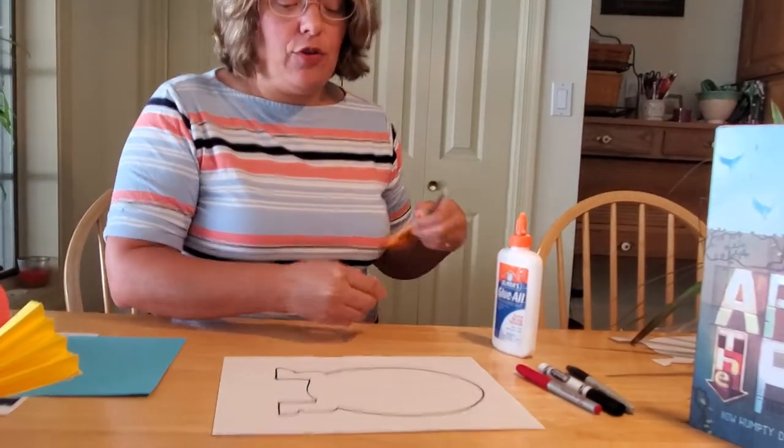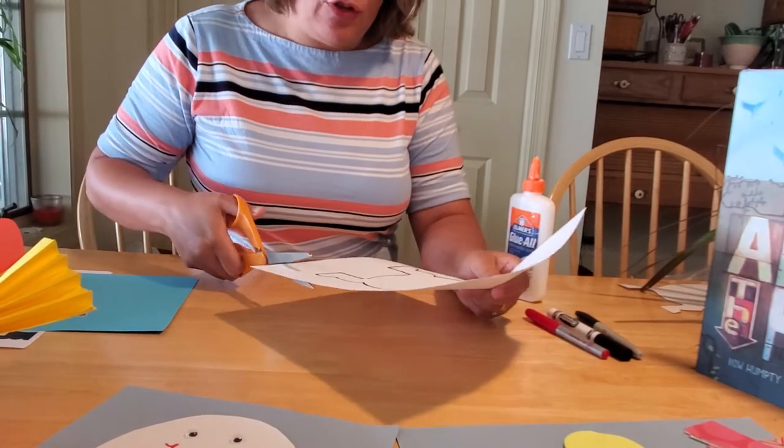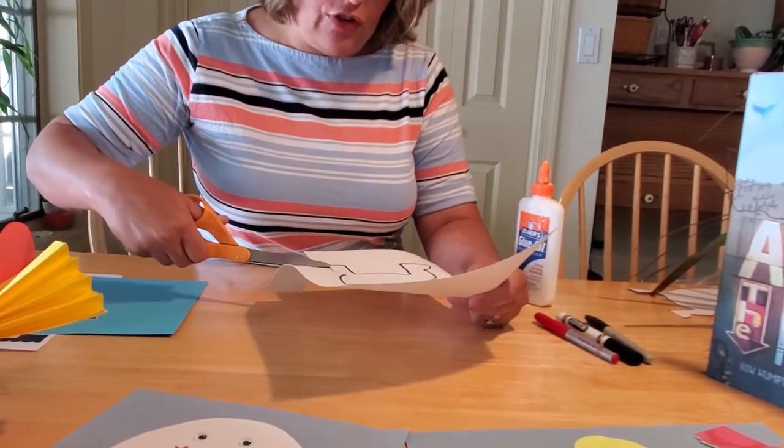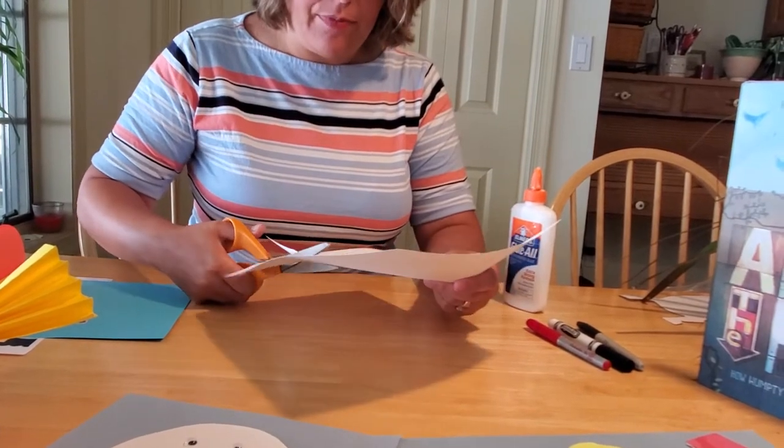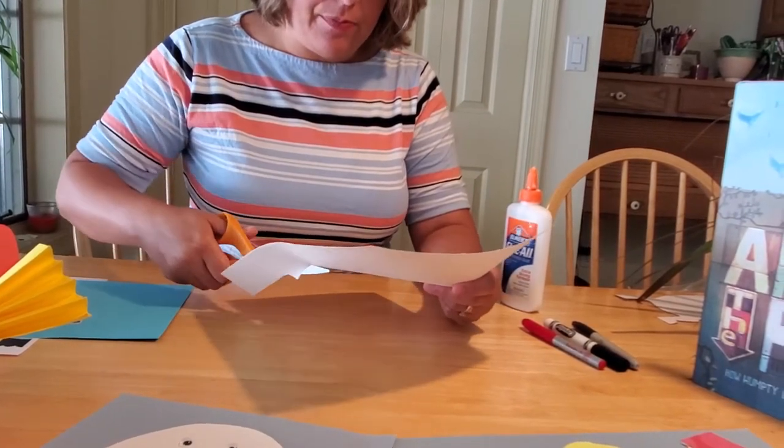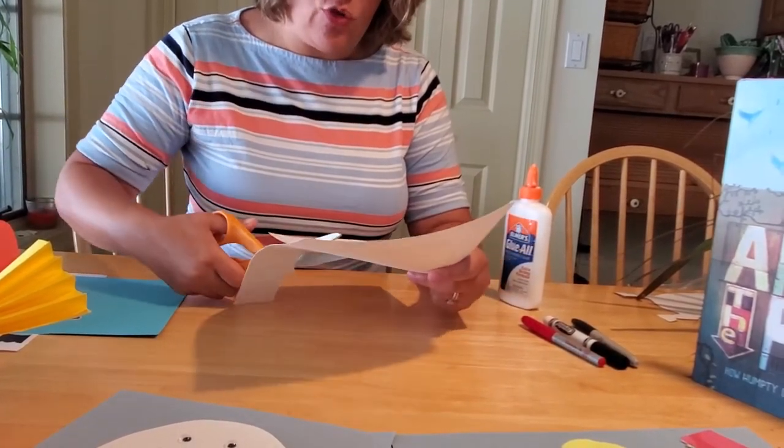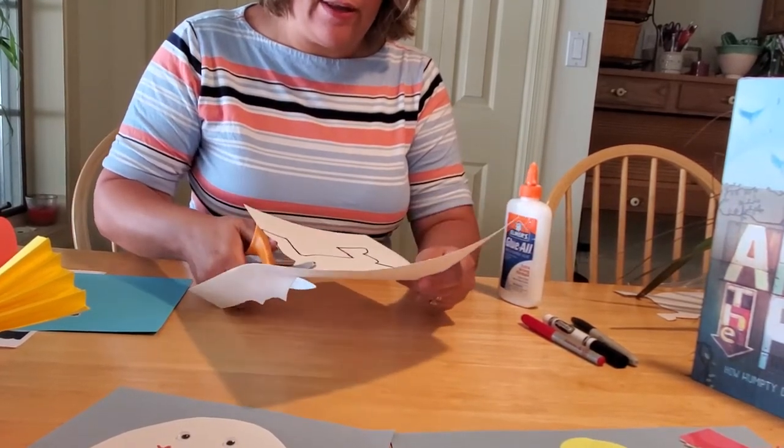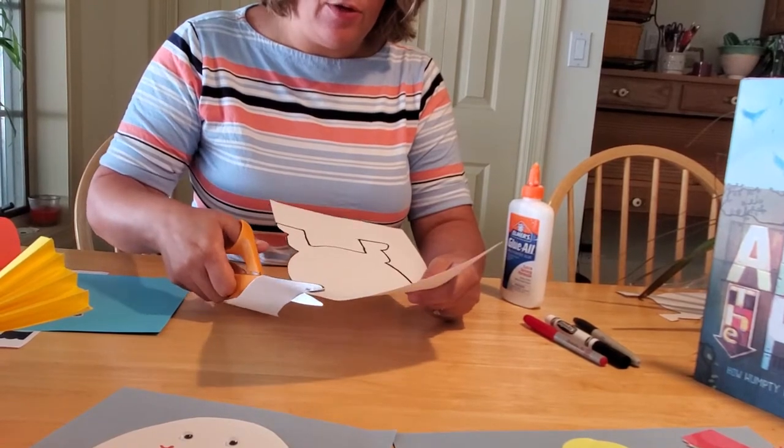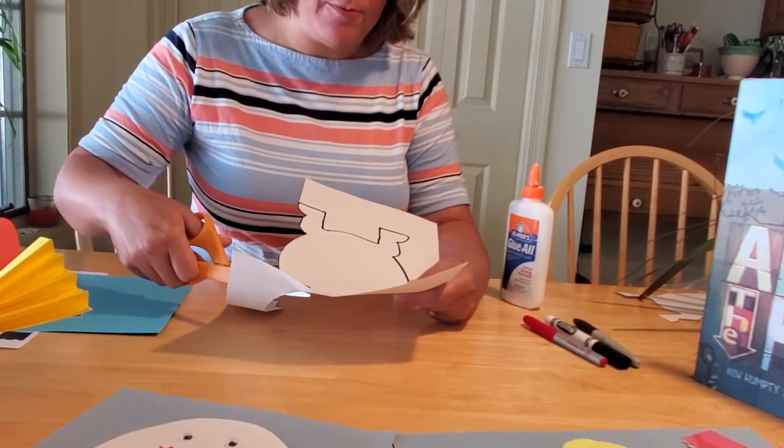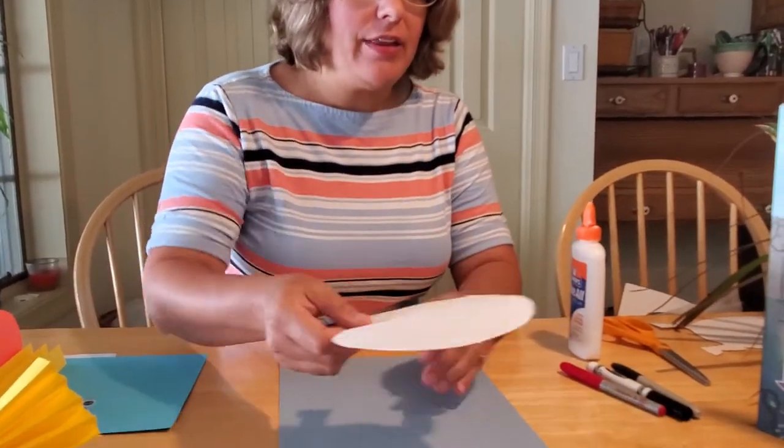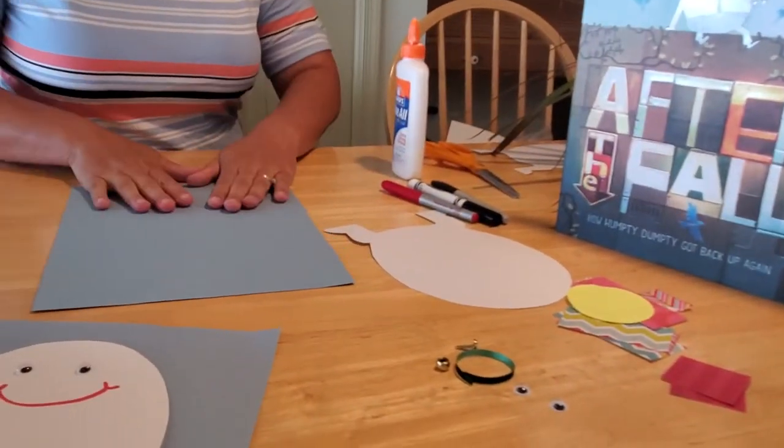So once you have your template kind of traced on your piece of paper, then it is time to cut it out. So again, if you're really good with scissors, go ahead and cut these out. Make sure you use safety scissors, not your mom's good sewing scissors. And you can just start cutting out along the legs and then cut out around the actual shape of your Humpty Dumpty. It's okay if you leave some of the black line that you made to trace him out on. It'll make him stand out more on the piece of paper.